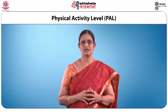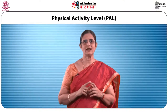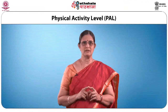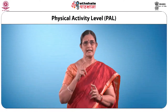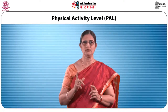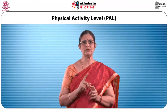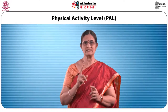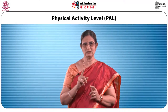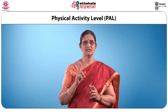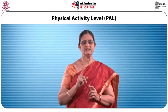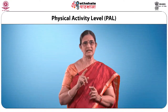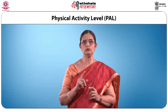Based on the intensity of habitual physical activity, PAL values for different physical activity levels are given in a table. For example, a person doing sedentary or light activity has a PAL value of 1.4 to 1.69. For a person who is moderately active the value is 1.7 to 1.99, and for a person who is vigorous or heavily active the value is 2.0 to 2.4.